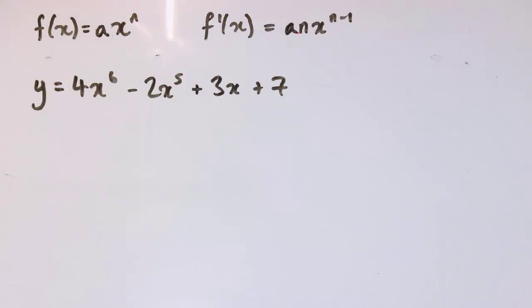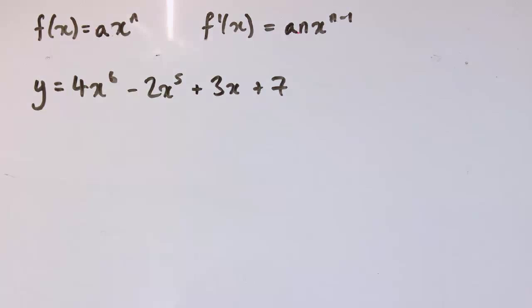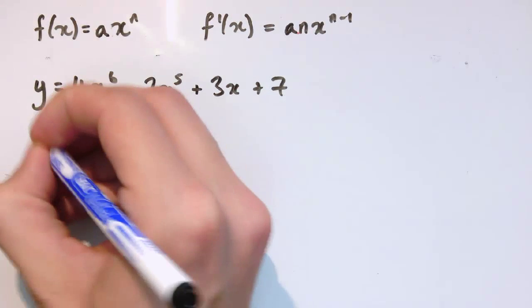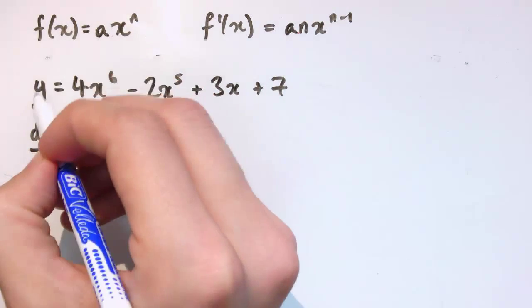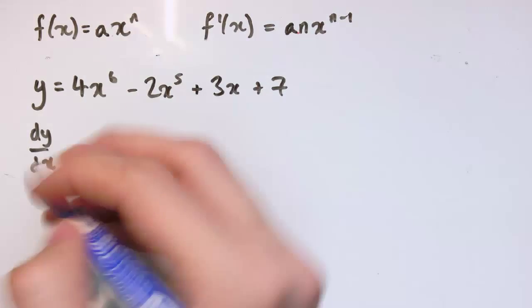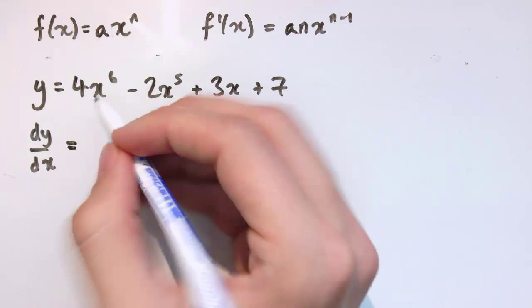Now, the next thing we realize with the gradient function that we can use is that if I want to differentiate a sum or a difference, i.e., just plus or minus lots of different terms that are all of this form, ax to the n, then we can just differentiate them all individually and add them together. So, if this is my y, then dy by dx, or, again, I could call y f(x) and f'(x) dy by dx, then the gradient function here, I just differentiate them one term at a time.